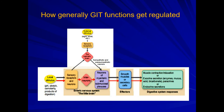This is another diagram to explain how GIT functions are regulated in general. The red arrows indicate the short reflex while the black arrows indicate the long reflexes. Multiple local stimuli can be present in the lumen of the stomach or the GIT lumen. These local stimuli stimulate sensory receptors or neurons present in the GIT wall, which this picture refers to as the 'little brain.'